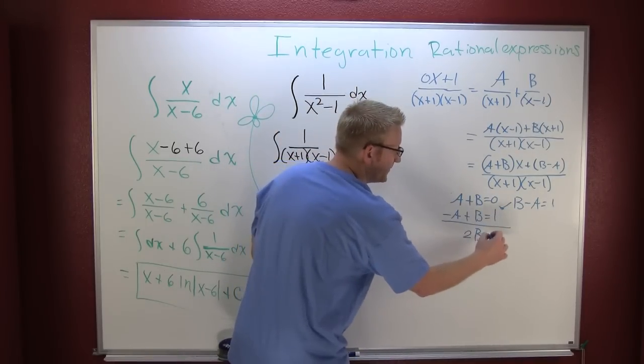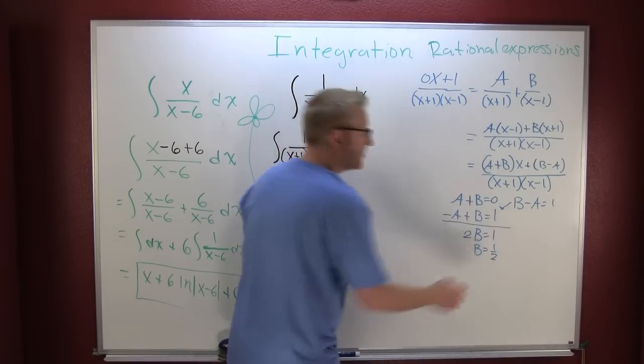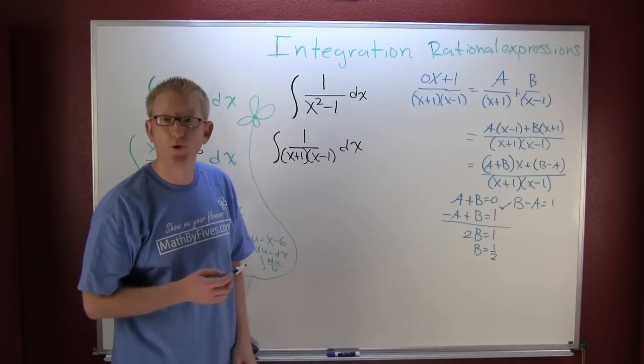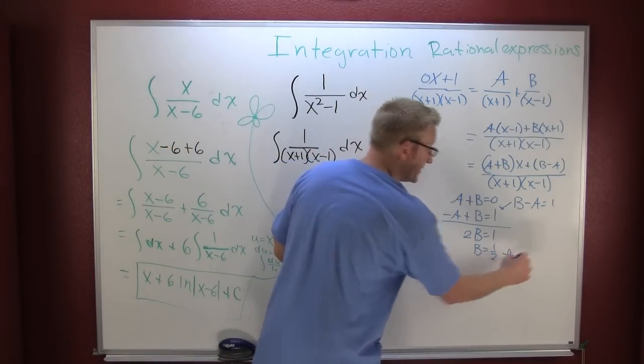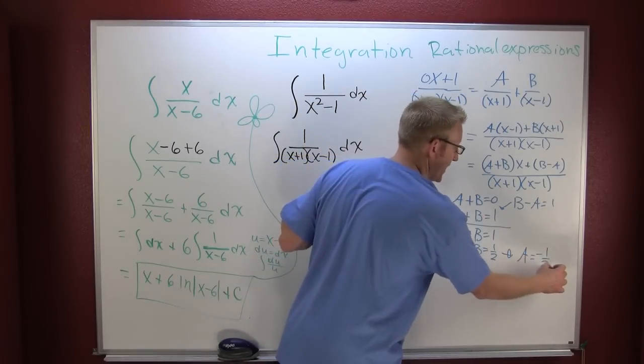2B is one, and B is one half. So then I can go throw those up into one of the originals, and I'm also going to get that A is the opposite of B, or minus one half.